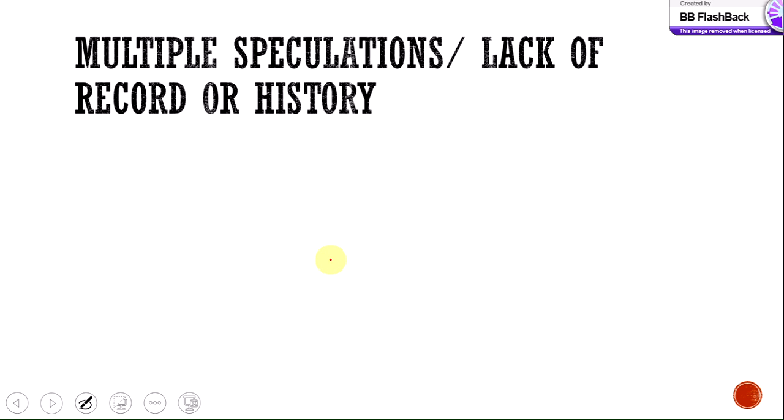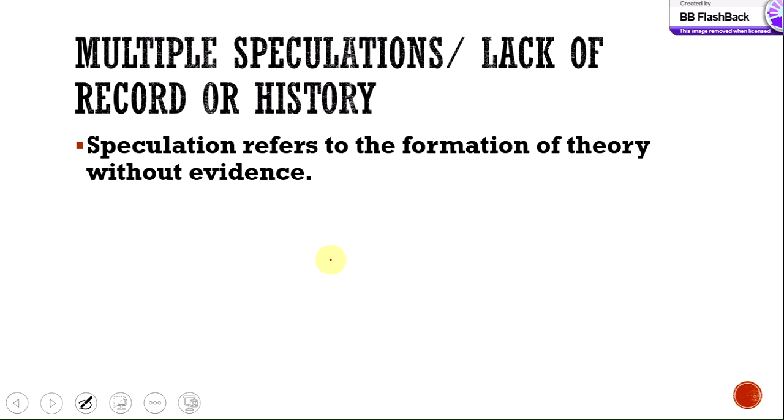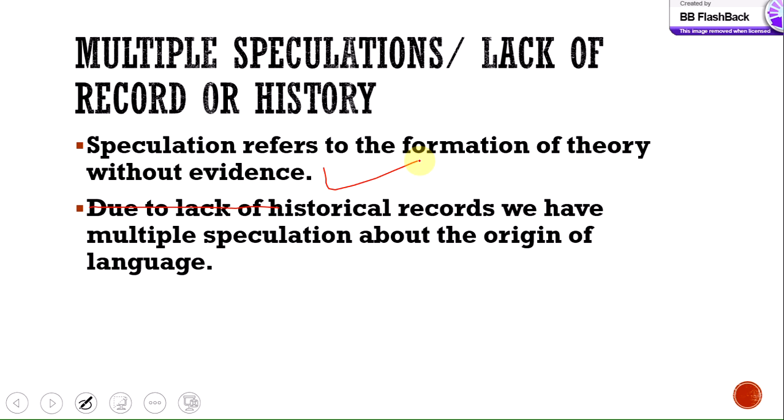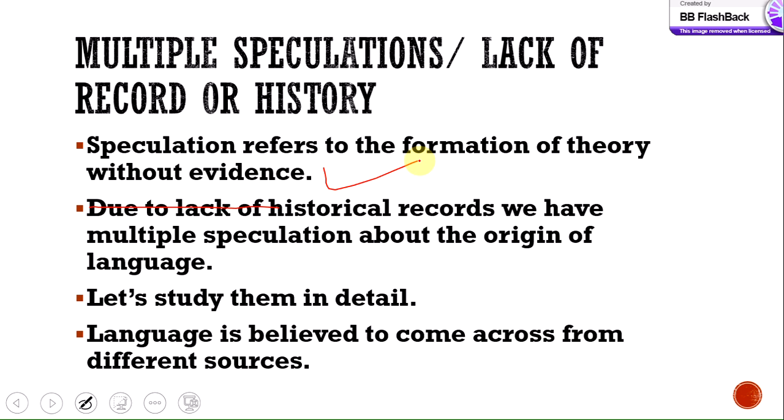We have a lack of historical records about the origin of language. We have only speculations and assumptions — language must have come from this source, or maybe that one. Speculation refers to the formation of theory without evidence. We have no proper evidence of the origin of language, so the things we are going to learn here are just speculations and not full-fledged results.